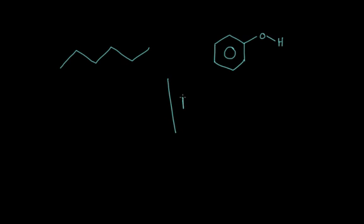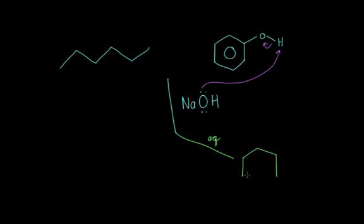We can use a base like sodium hydroxide, which is a strong base. And what you'd find is that these electrons would be able to deprotonate the phenol, meaning that in the aqueous layer this time, you would be left with the phenolate anion.